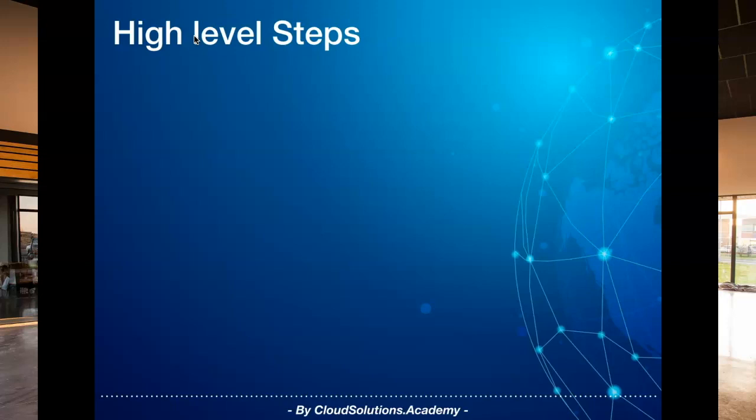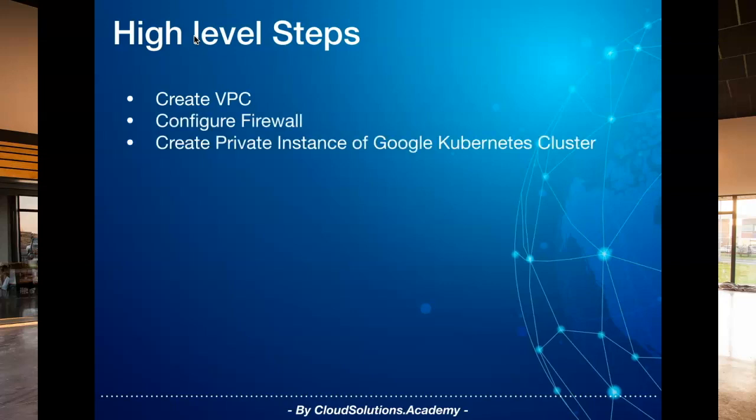The first step is to create a VPC — virtual private cloud — to isolate all our network resources for our lab. Next we go about creating a private instance of a Google Kubernetes cluster. A private cluster basically ensures that all nodes and the master server are isolated from the public internet, protecting your Kubernetes nodes from outside traffic.